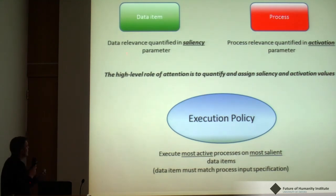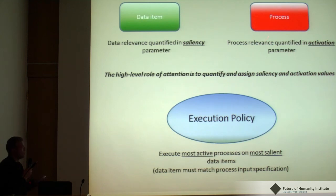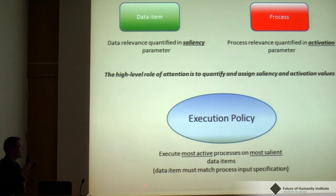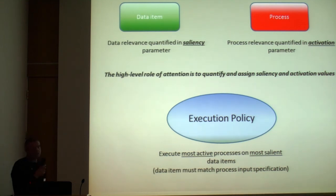To visualize this: data items are given a parameter called saliency, which quantifies the relevance of data in the current operating situation. Processes have an activation value, also a quantification of their relevance given the situation. The high-level role of attention is to quantify and assign these parameters to data and processes. The execution policy then becomes simple: execute the most active processes on the most salient data items.